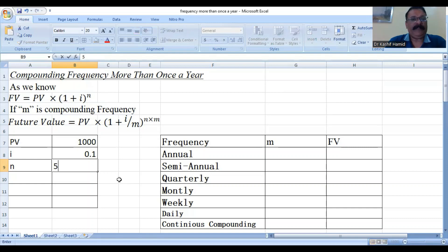what will be the future values if the compounding frequency is annual, if the compounding frequency is semi-annual, if the compounding frequency is quarterly, monthly, weekly and daily. And in last, we will perform the continuous compounding by using the mathematical exponential value.